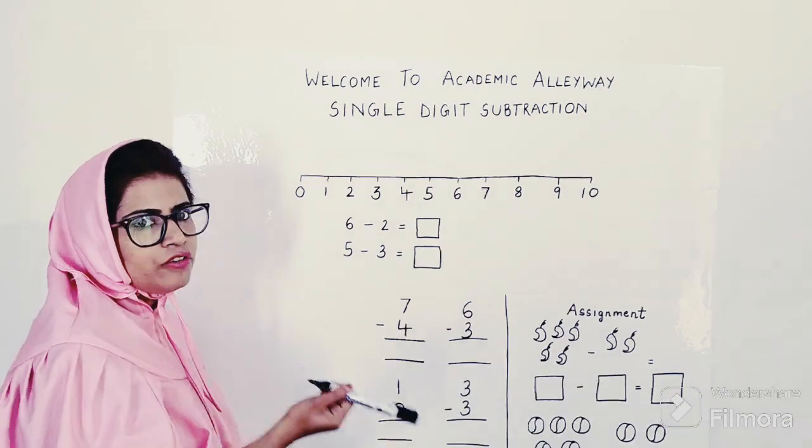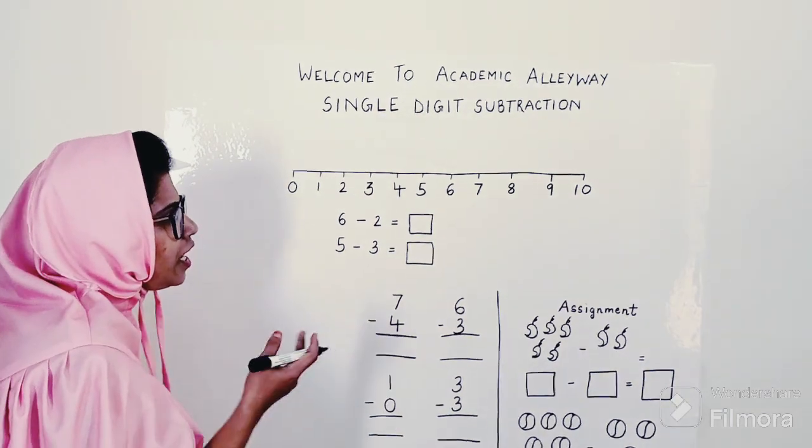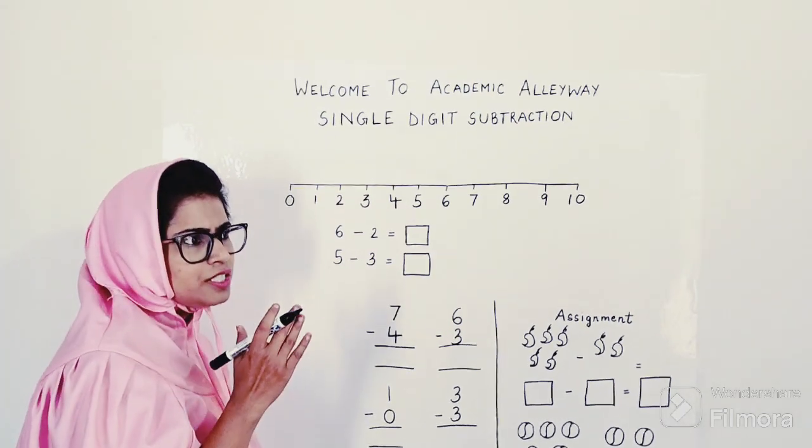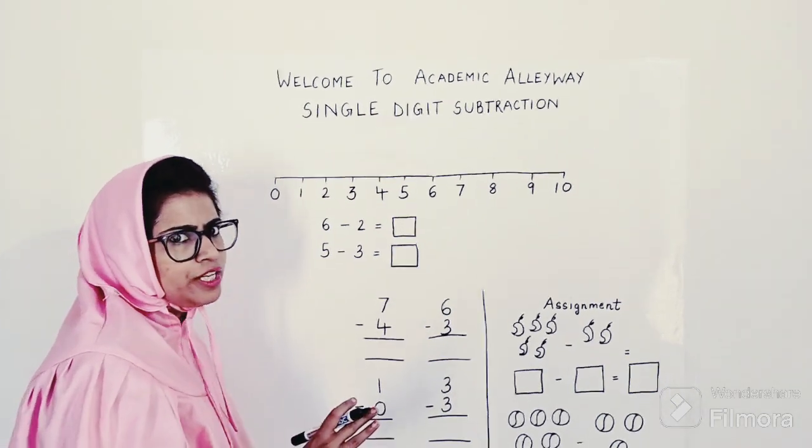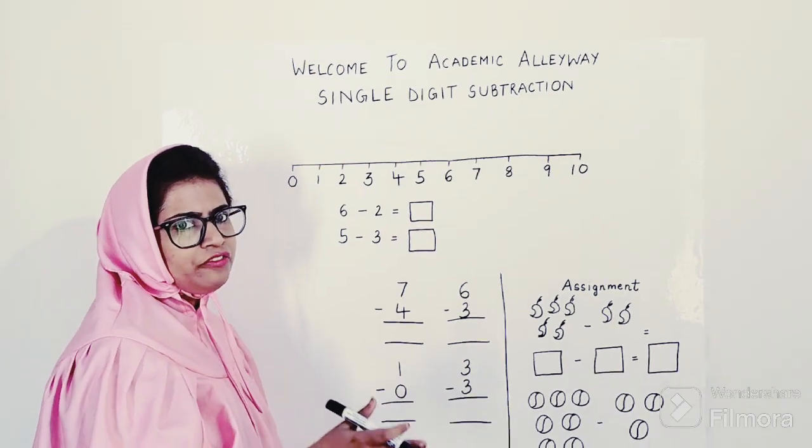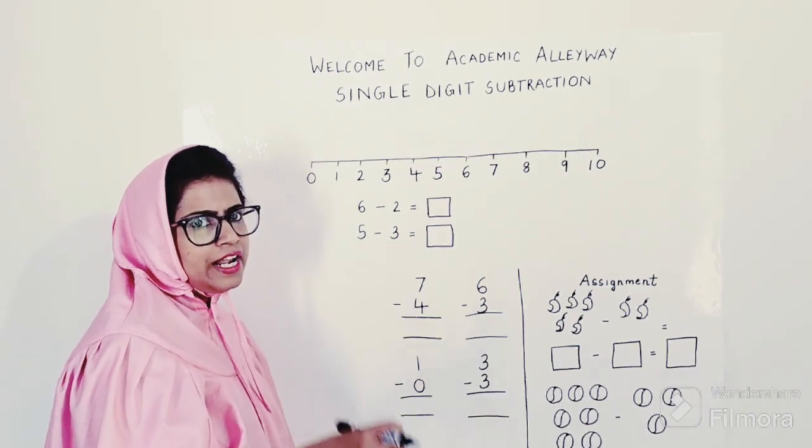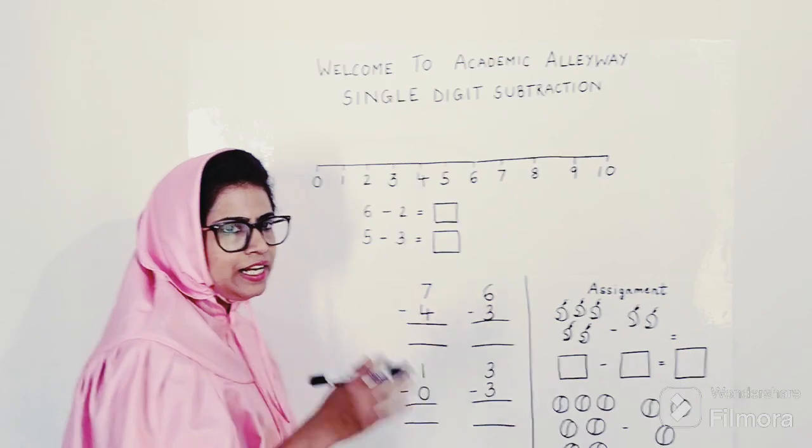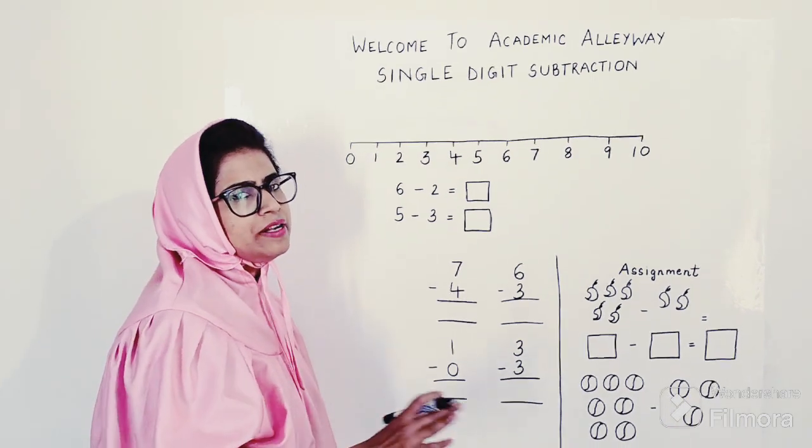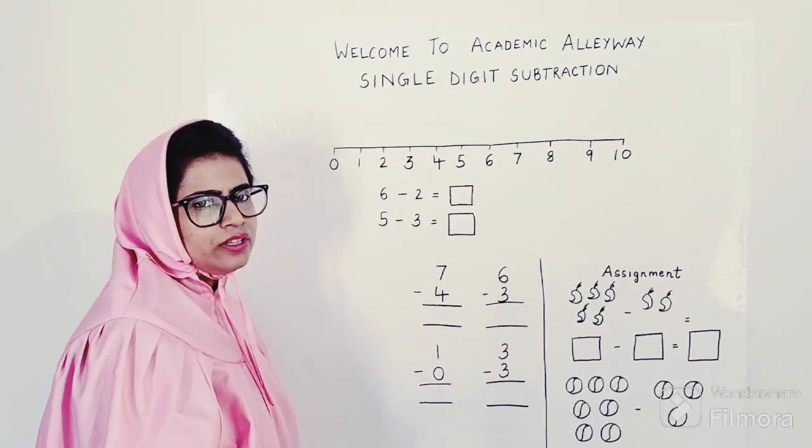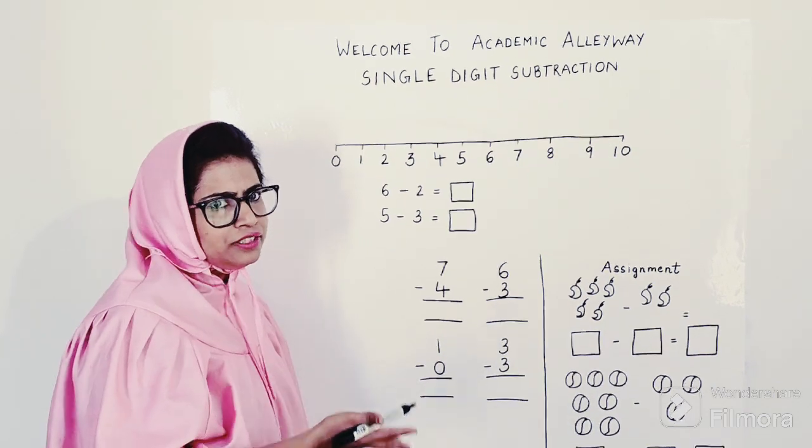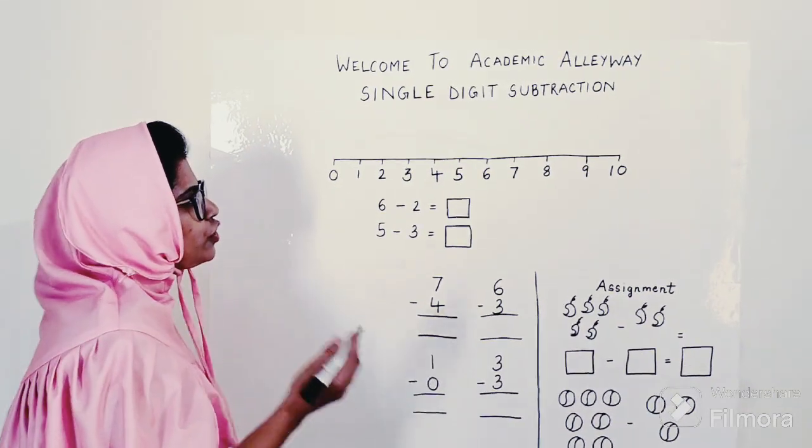So now let's move forward to subtraction. First, make them learn with the objects they have. Put five pencils together and lift two pencils out of that, and let them count how many pencils are left. Do the same thing with toys, crayons, etc. with different number combinations.